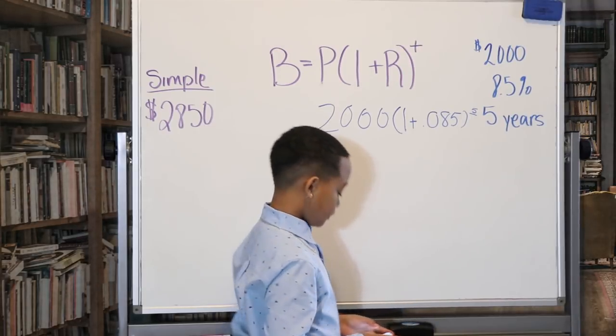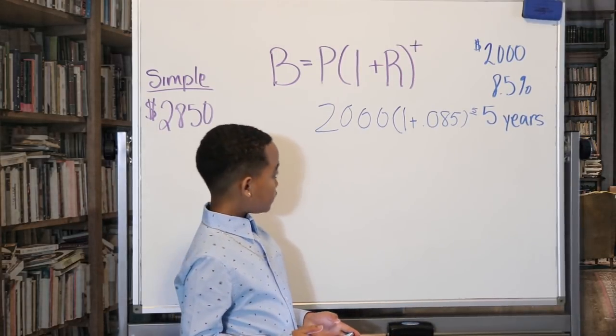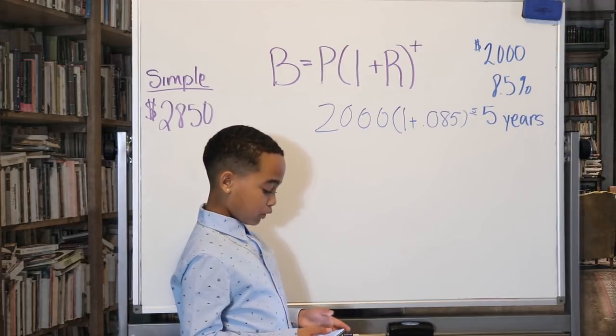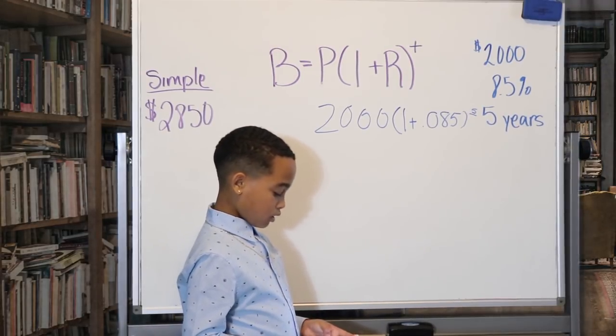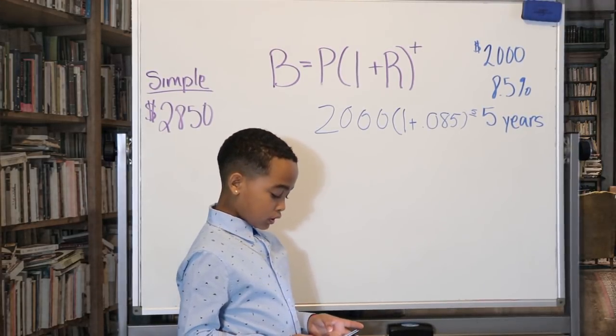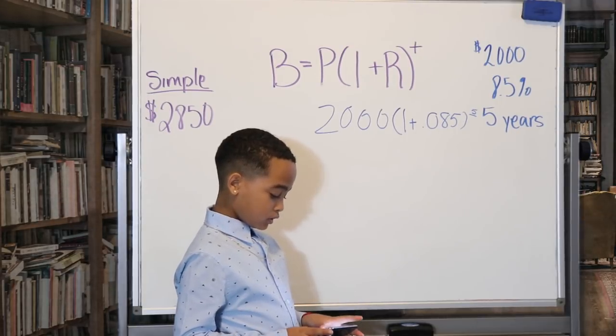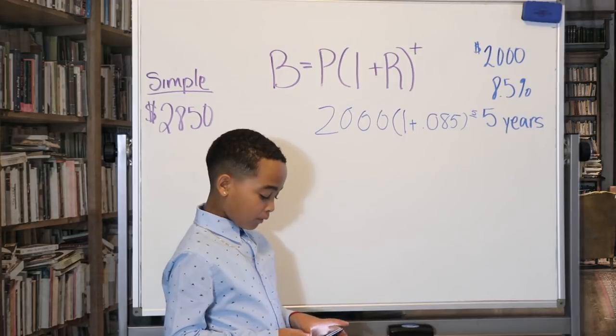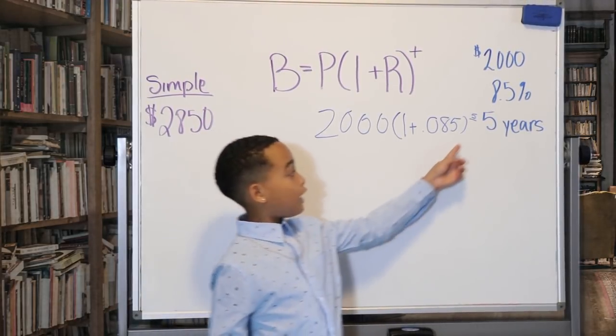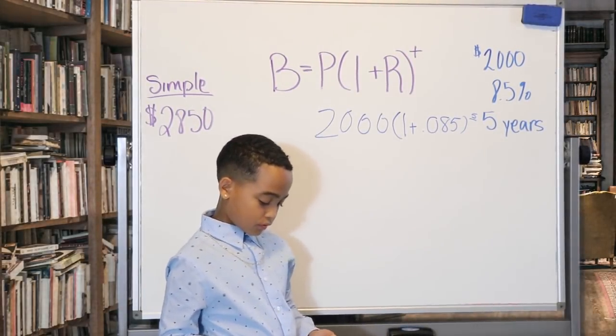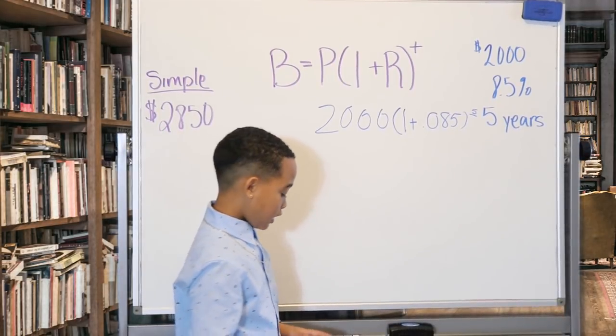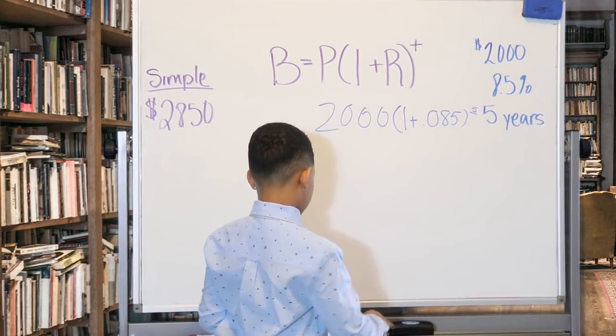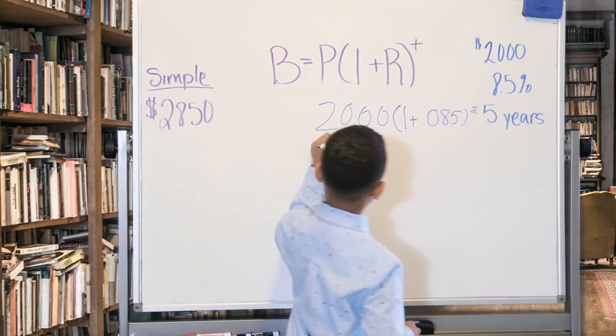Okay, so 2000, 1 plus 0.085 to the fifth power - make sure 5 is the exponent - equals $3,007.31.